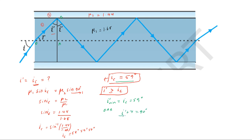Since i' minimum is 59° (the critical angle), from i' + R = 90°, the maximum value of R is 90° − 59° = 31°. So R maximum equals 31 degrees, which is the maximum angle of refraction at the entry face, corresponding to the maximum angle of incidence in air.